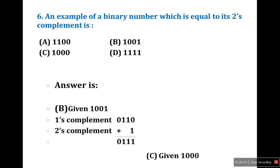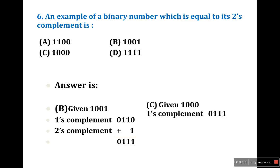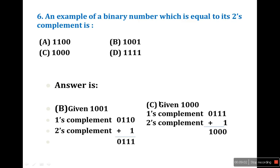Select option C: given is 1000. One's complement is 0111. Add 1 to get 1000. The two's complement equals the original number 1000, so the answer is C. A binary number equal to its own two's complement.